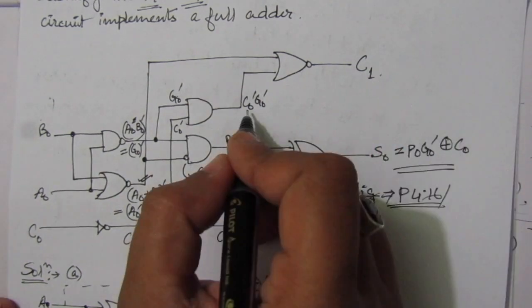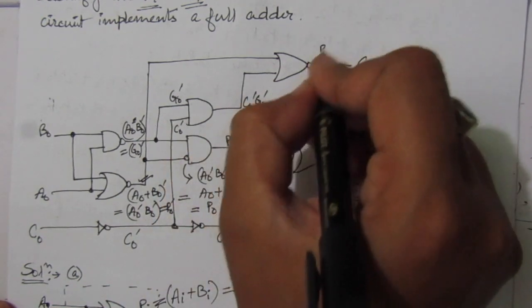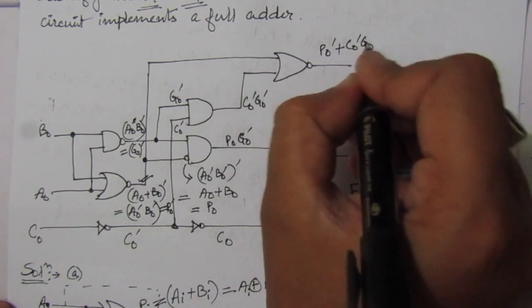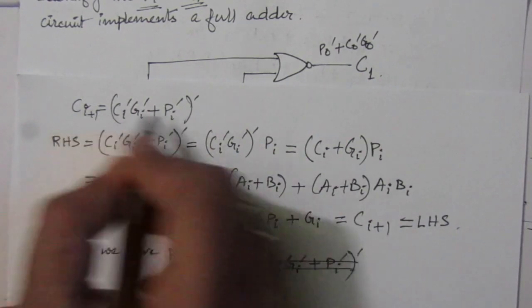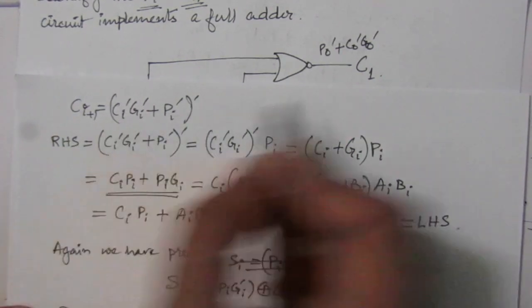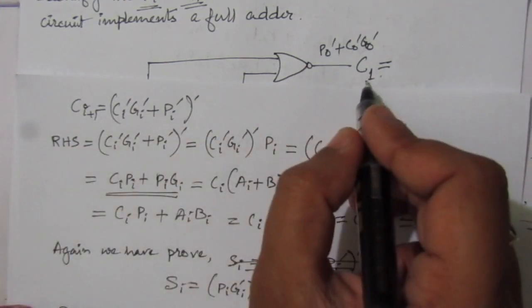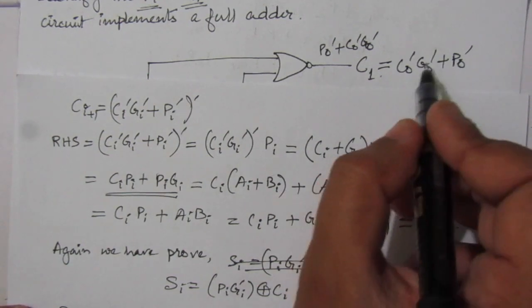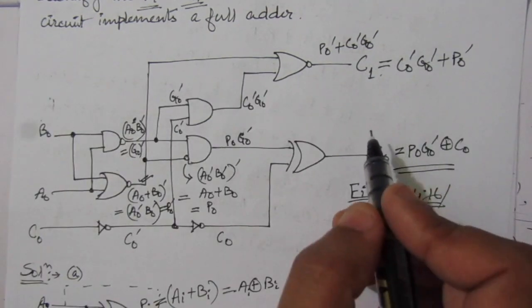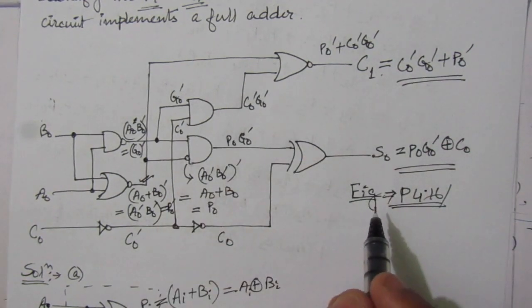Now let us verify the carry output. We have C_0 bar and G_0 bar, and this is added with P_0 bar. At this output we can write P_0 bar plus C_0 bar·G_0 bar. From the first part, C_{i+1} with i equal to 0 gives C_1 equal to C_0 bar·G_0 bar plus P_0 bar. This term matches exactly. So from this circuit we have obtained both the sum and carry outputs, confirming this circuit is a full adder. This is the solution to problem number 4.16.